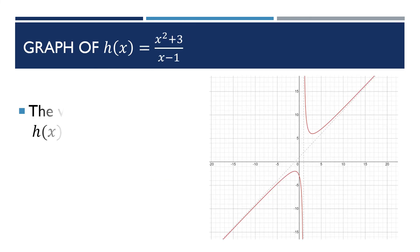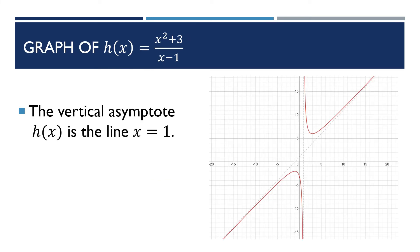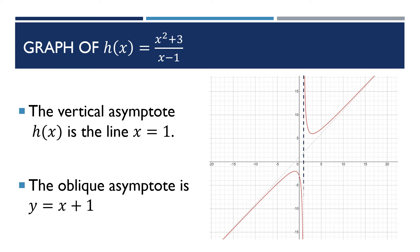For the graph, the vertical asymptote of h(x) is the line x = 1 — shown as the blue dotted line. The oblique asymptote is at y = x + 1, which is the slanting line. That is the oblique asymptote.